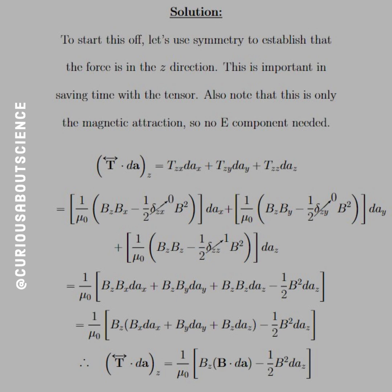Solution. To start off, let's use symmetry to establish that the force is in the z-direction — this saves time with the tensor. Also note that we only need the magnetic attraction, so no electric field component is needed. That saves us two-fold, because I and J only need one direction: z. So we need T_zx, T_zy, and T_zz, since z is our first index. Let's break it down term by term — we have the tensor dotted with dA_z, so our integral runs only on the z component.